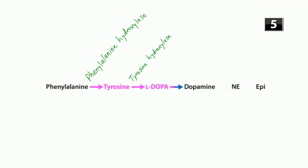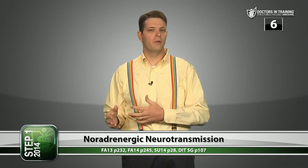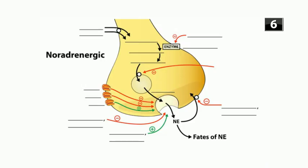Dopa is converted to dopamine by dopa decarboxylase, with vitamin B6 as an important cofactor. Dopamine is then converted to norepinephrine, which requires vitamin C as a cofactor. Norepinephrine is used to make epinephrine. Those are all the steps of catecholamine synthesis.